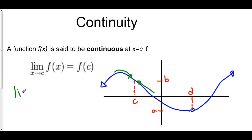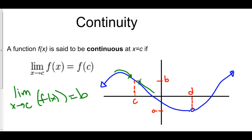So the limit as x approaches c of f of x is equal to b. Now, what is f of c? f of c is also b. Because the limit as you approach c is equal to the function value at c, our function is in fact continuous at x equals c.